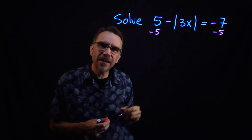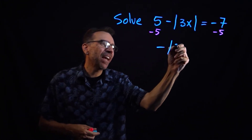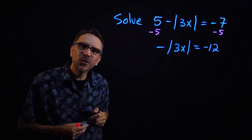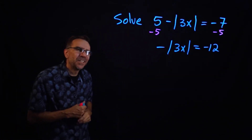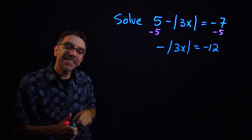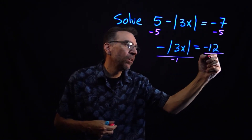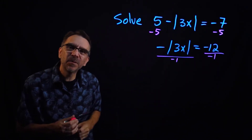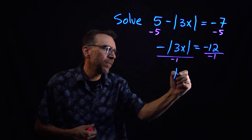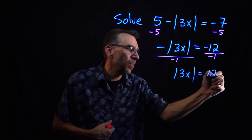We'll subtract 5 on both sides, leaving us with negative absolute value of 3x equals negative 12. We have a negative in front of the absolute value, so we divide both sides by negative 1. The negatives cancel, leaving us with absolute value of 3x equals positive 12.